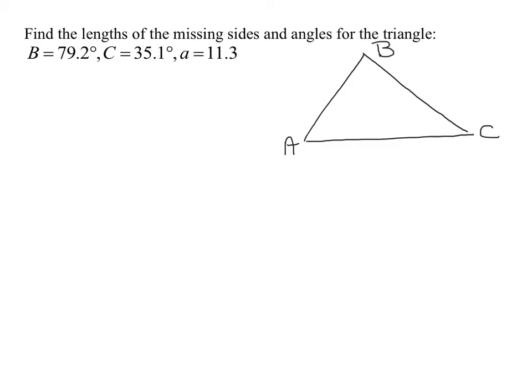We know that angle B is 79.2 degrees, angle C is 35.1 degrees, and side A is 11.3. Now remember, side A is opposite angle A, so it's right there.